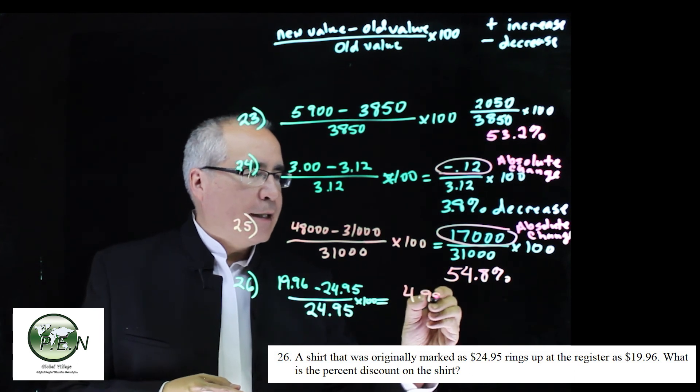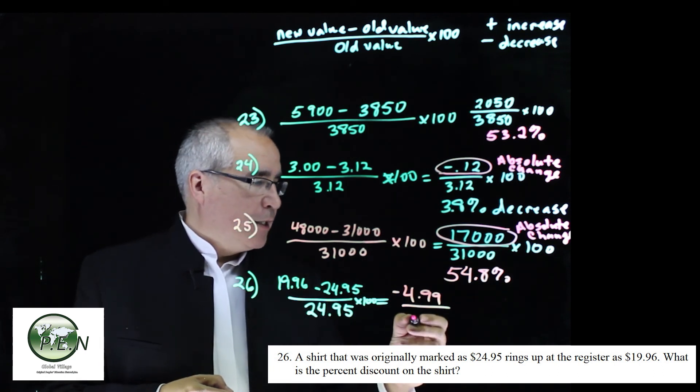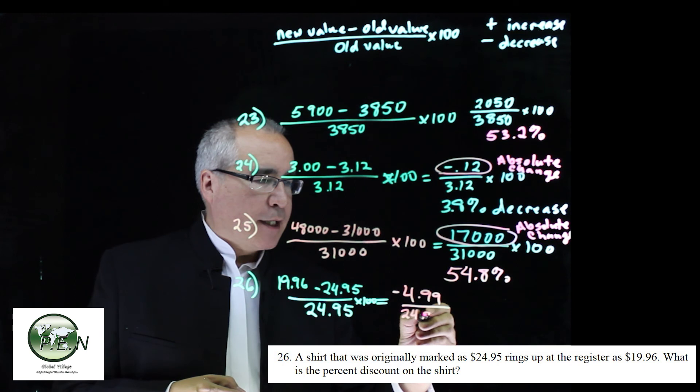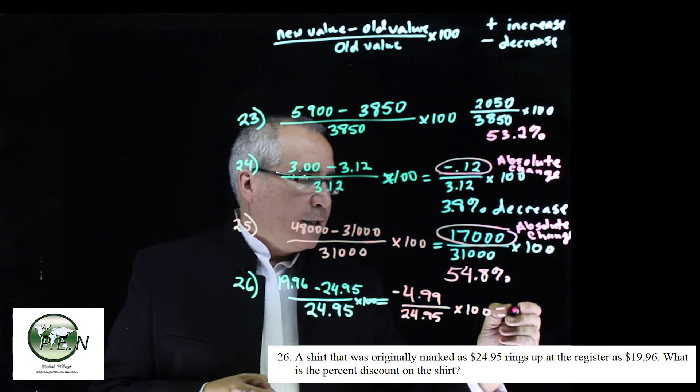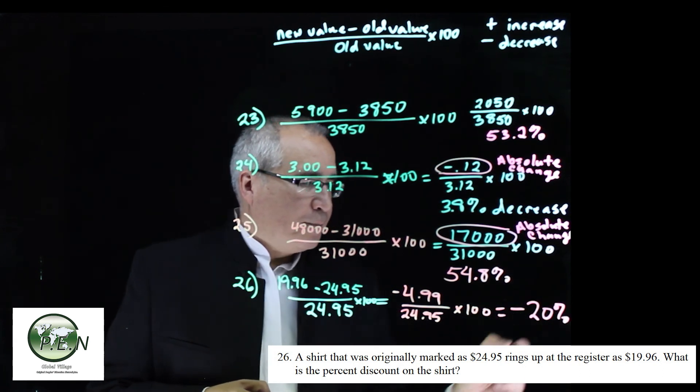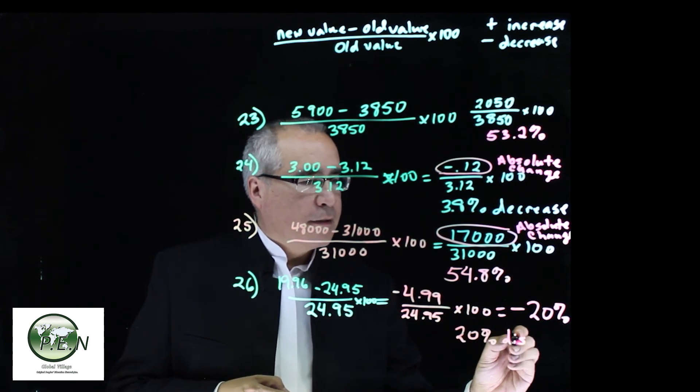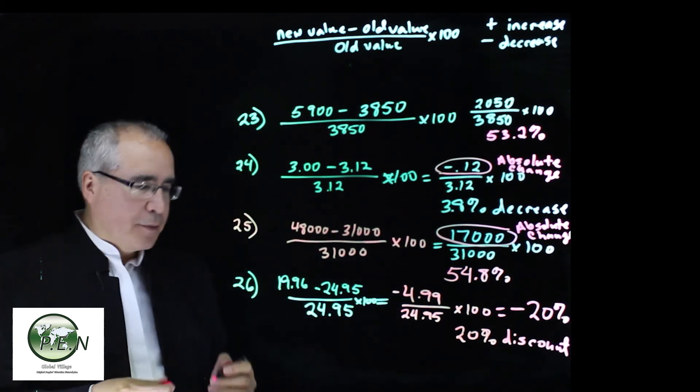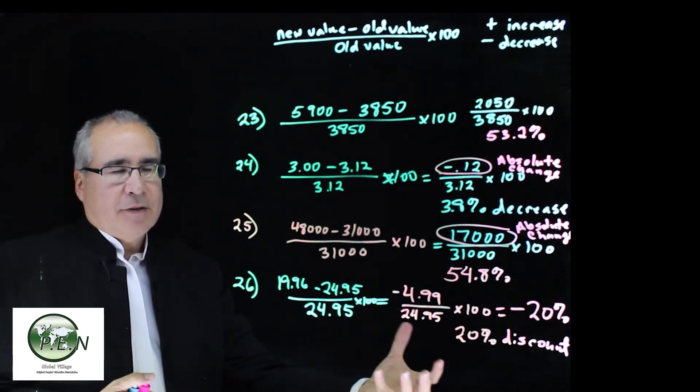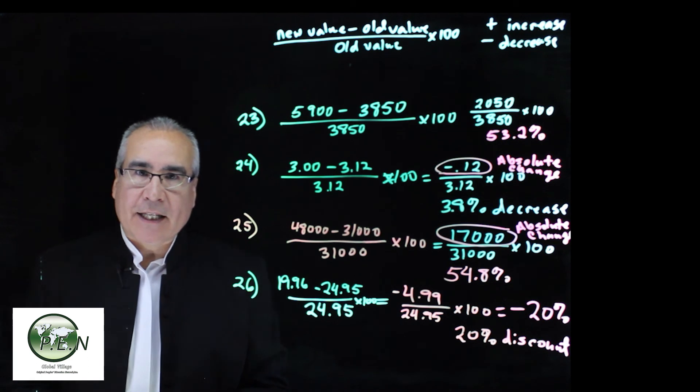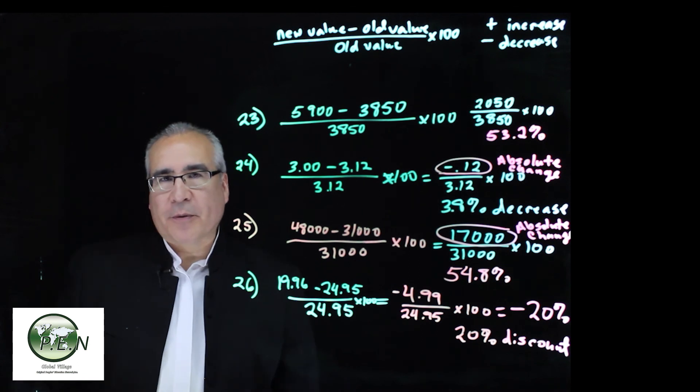So we do the subtraction, and we get 4.99, actually it's negative, right, because the old value was bigger, and we divide by 24.95, multiply by 100, plug this in our calculator, and we get a decrease, negative 20%. Again, you write it that way, or you say it's a 20% discount. That's what was discounted, 20%. So they actually paid 80% of the price, the discount was 20, the price paid was 80. We're going to start working on those complements of each other as we move forward in this chapter.